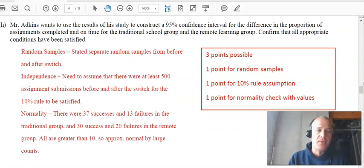Mr. Atkins wants to use the results of the study to construct a 95% confidence interval, looking for the conditions. So this is huge. Random, independent, the 10% rule, and normality. And so the mistake I see a lot of kids make is with the normality condition, they want to use the central limit theorem. But the central limit theorem only applies to the distribution of means or sampling distribution of means. With proportions, we're looking for those successes and failures being more than 10.